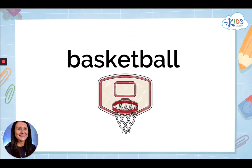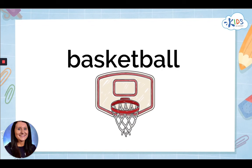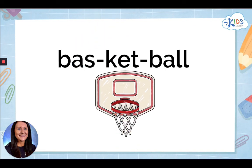Let's try this one. This word has three vowels, each separated by consonants, so it has three closed syllables: bas, ket, and ball. This means that the vowel sounds are probably short: bas-ket-ball.